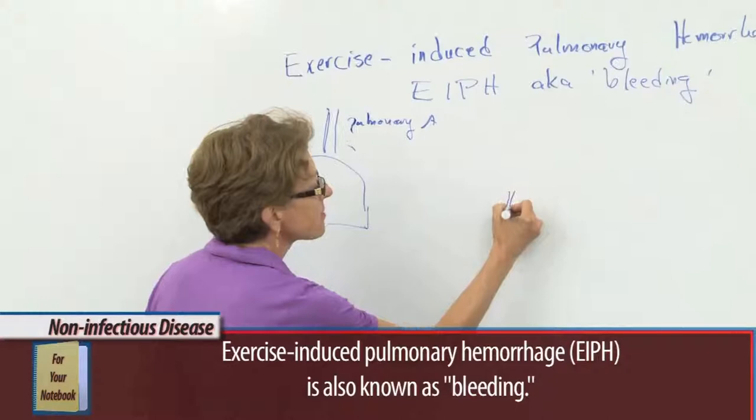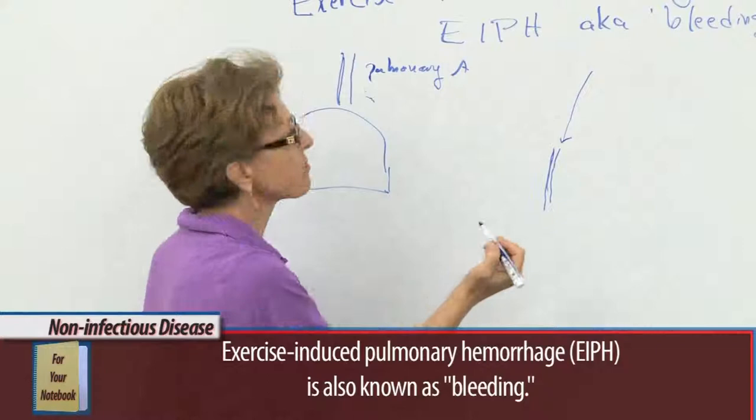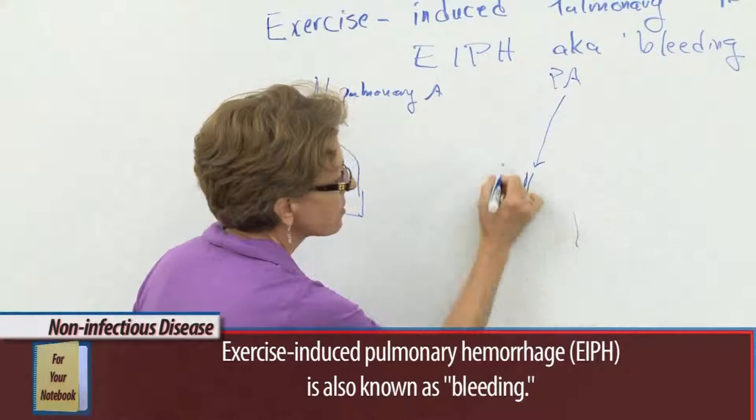It's got two forces on it. One is the driving force of positive pressure from the pulmonary artery coming down into it. The other, here's our lung, is a pulling force, so going this way, from the pleural pressure in the lung when the lung has to expand.